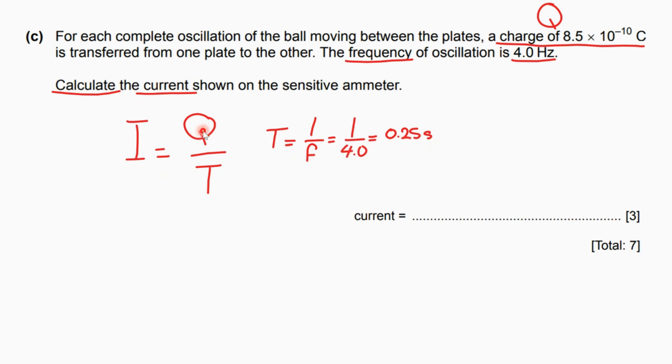Here we have the time taken and the Q from section c. I equals Q which is 8.5 times 10^-10 divided by the time taken which is 0.25. It gives us the current which is 3.4 times 10^-9 and the unit which is amperes.